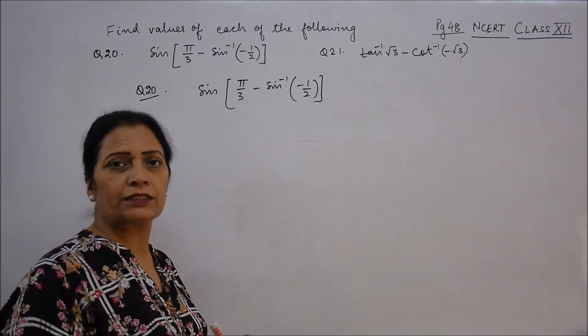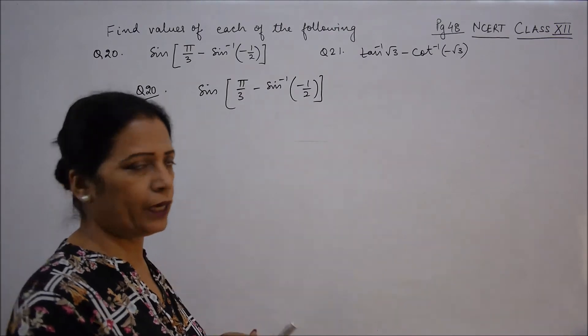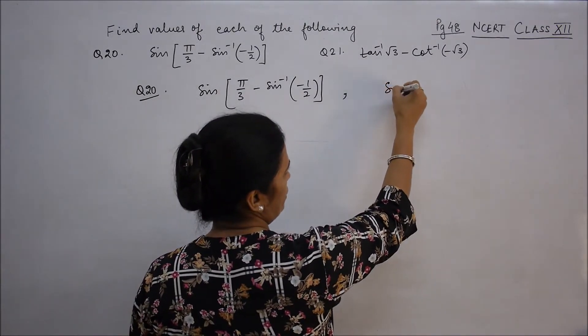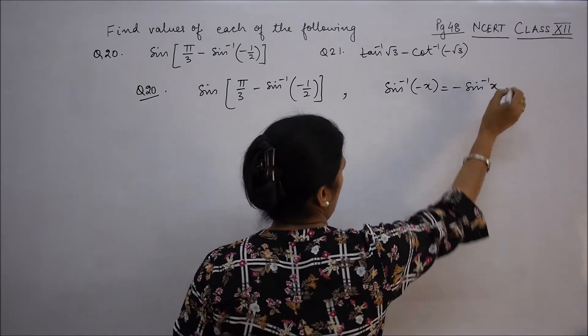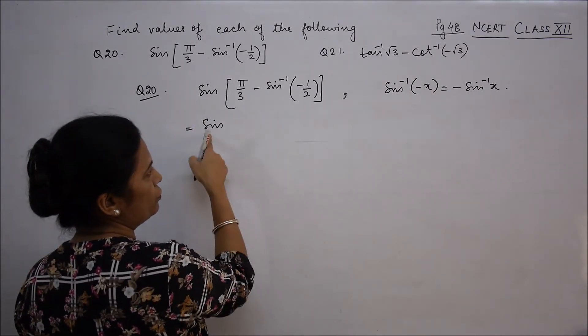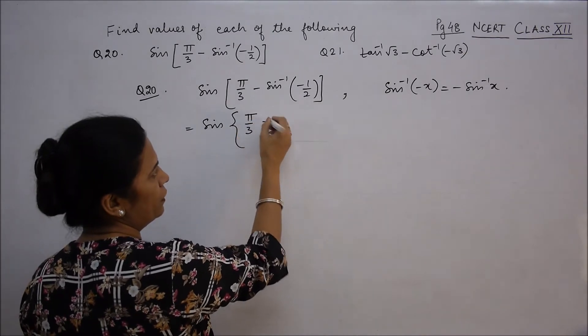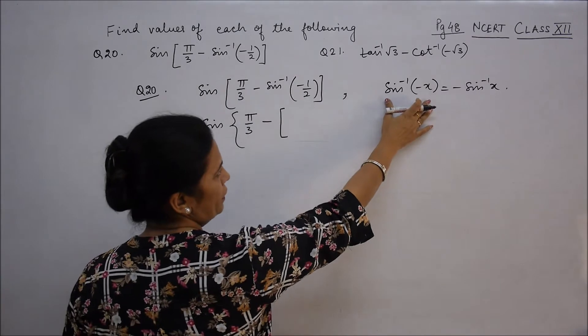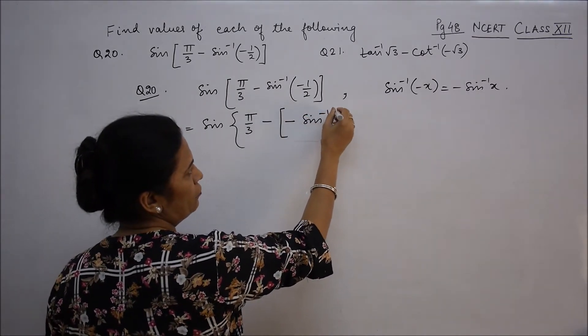First of all, if you have any inverse function with a negative value, you can apply the property. Sin inverse(-x) equals minus sin inverse x. This is the rule. When we write this, we have to change the sign. Here 5π/3 minus, sin inverse minus x equals minus sin inverse 1/2.